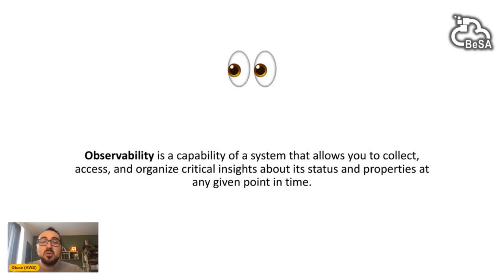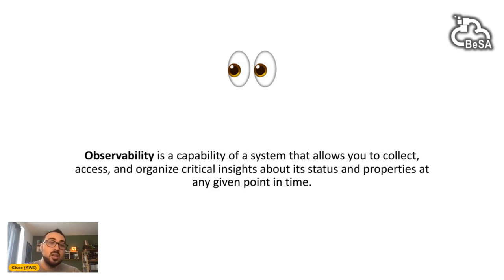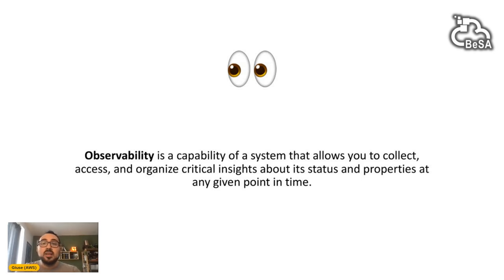I always like to start with analogies. Observability acts as a window into the inner workings of your systems, offering crucial insights into health and performance of your distributed architectures. This is similar to how a car dashboard's indicators — the speedometer, fuel gauge, engine temperature — provide vital information about your vehicle's current state. More formally, observability is the capability of a system that allows you to collect, access, and organize critical insights about its status at any given point in time.